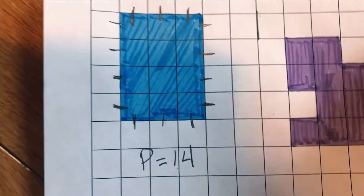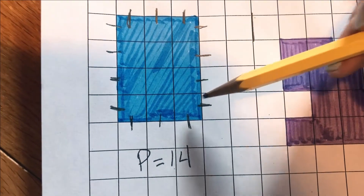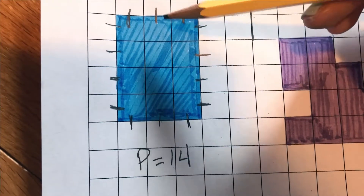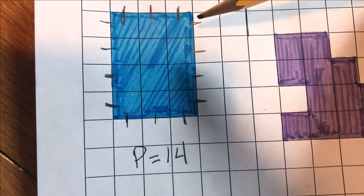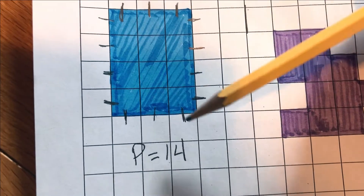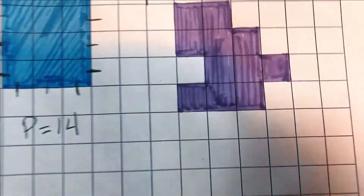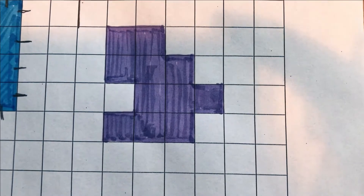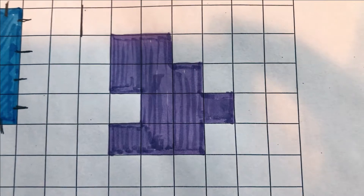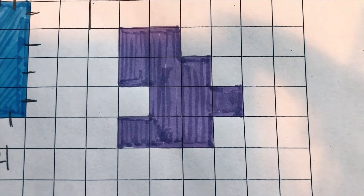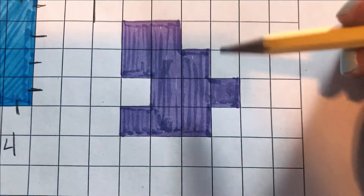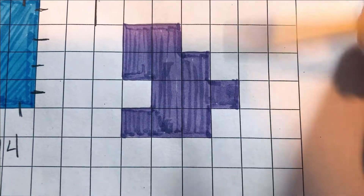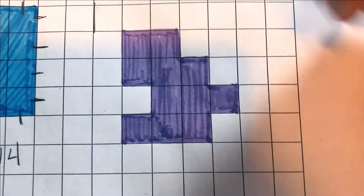Now you may be wondering why I put these funny marks around the outside. For a shape like this you might not have to, because it's really obvious that you've counted all sides. But when we move on to our not-so-normal shape, it's going to be really important that you make sure you get all of these little corners. So let's give it a go.